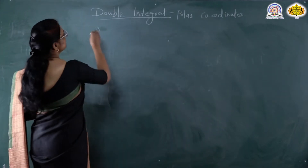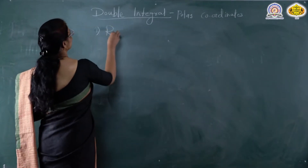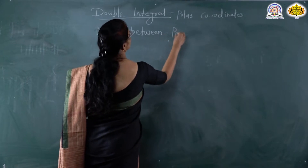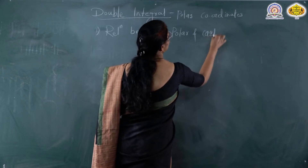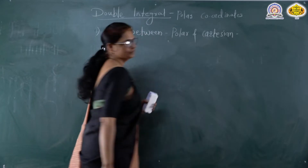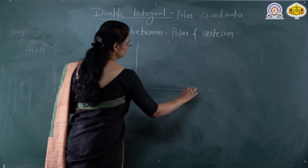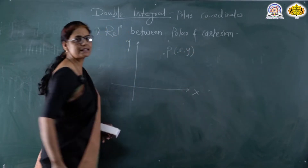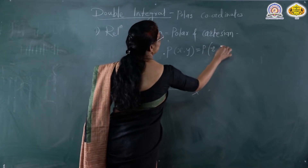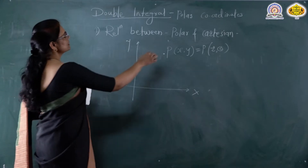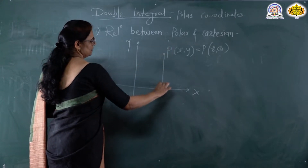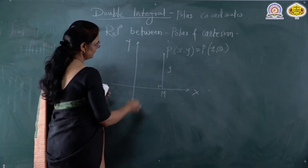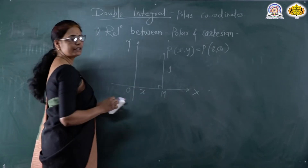Our first point is the relation between polar and Cartesian coordinates. Consider a two-dimensional xy plane. Suppose P is any point with Cartesian coordinates (x, y) — also called rectangular coordinates — and polar coordinates r and theta. We draw a perpendicular from point P to the x-axis; call it PM. This distance equals the y-coordinate of the point, and the distance from origin to M equals the x-coordinate.